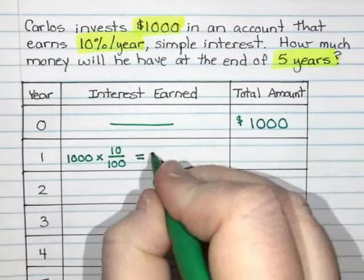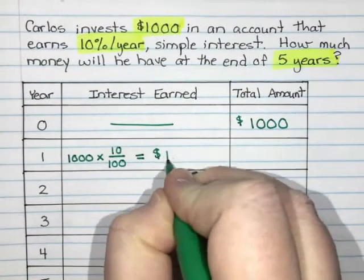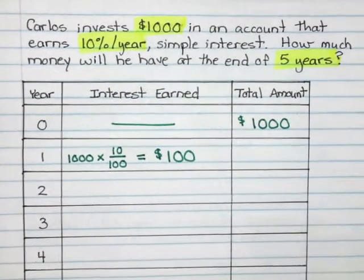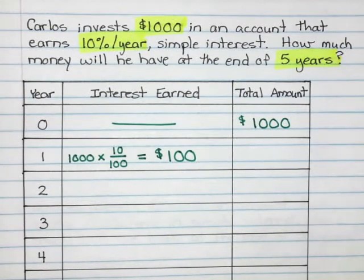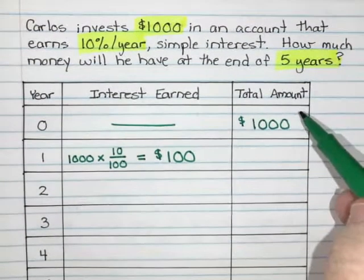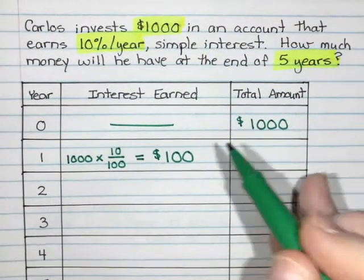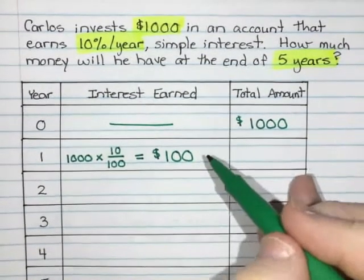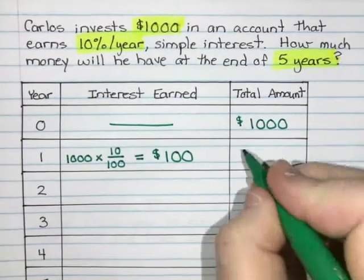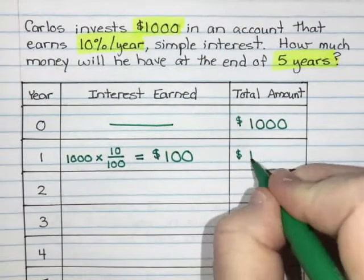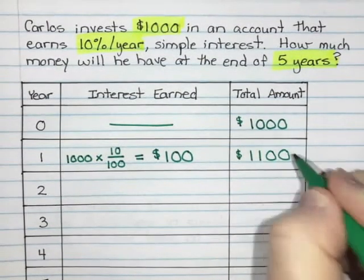So for putting his money in that account for one year, he earned 100 extra dollars. So the total amount in his bank account is now $1,000 plus that 10% interest or $100. So he now has $1,100. That's pretty awesome.